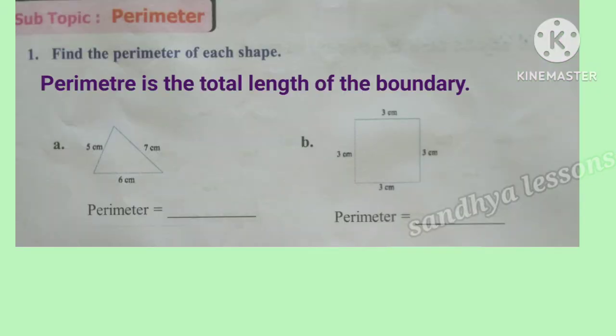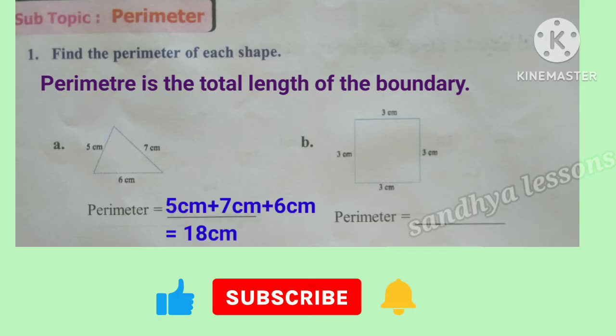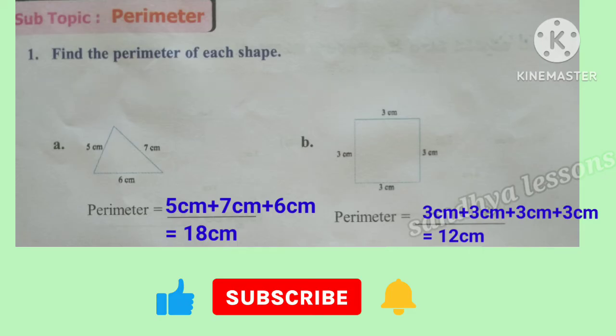Find the perimeter of each shape. The perimeter of a particular shape is the total length of the boundary. Picture A is a triangle with sides 7 cm, 5 cm, and 6 cm. Therefore, perimeter equals the total length of the boundary, that is the sum of all sides: 5 cm plus 7 cm plus 6 cm, which equals 18 cm.